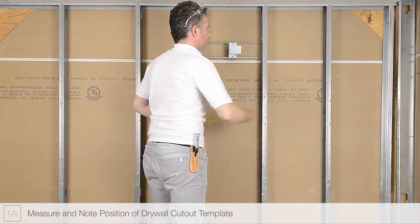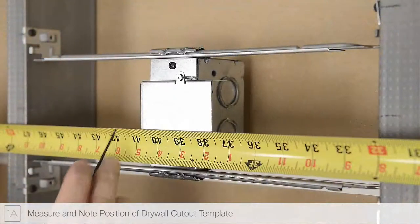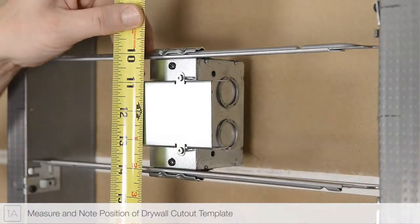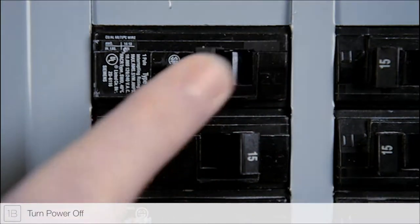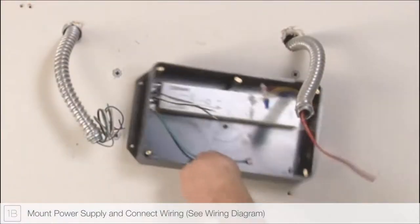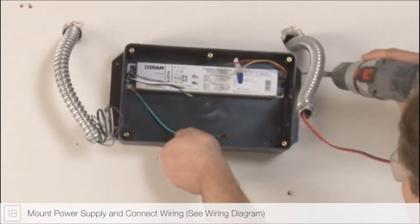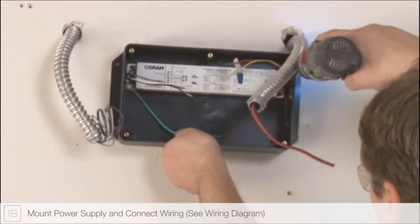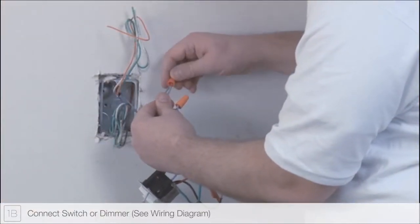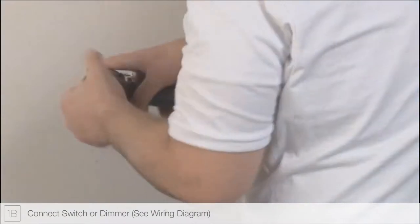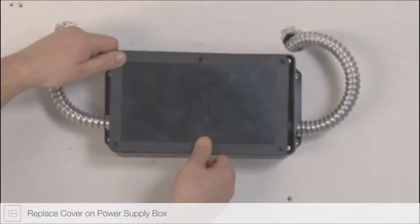Measure the drywall cutout template and note its position for later steps. Step 1B: Before doing any electrical wiring, always ensure the power is turned off at the breaker panel. Mount the remote power supply in an accessible area nearby. Reference the wiring diagram included with the installation instructions to connect either a standard switch or a compatible dimmer.